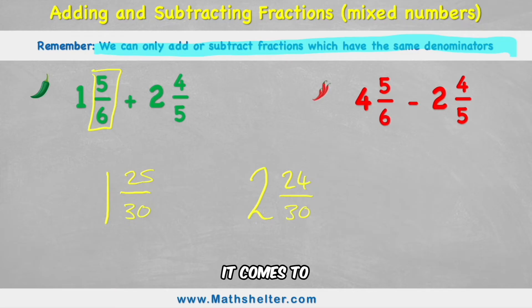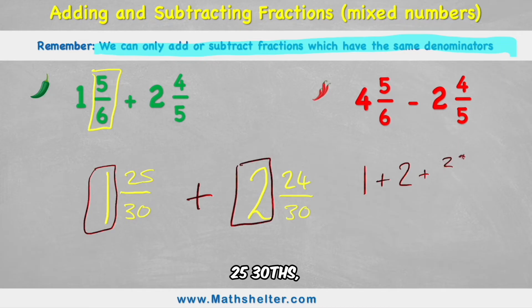Now it's pretty simple when it comes to adding these, because another way of writing this would be that I have 1 as my whole number, plus 2, the other whole number, plus 25 thirtieths, plus 24 thirtieths. So let's start with the easy part first.